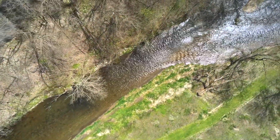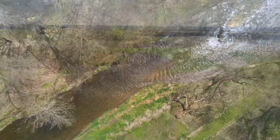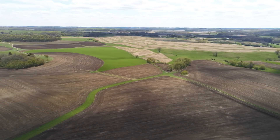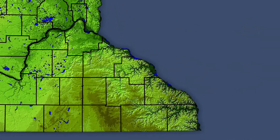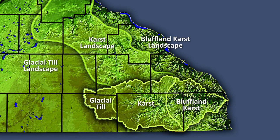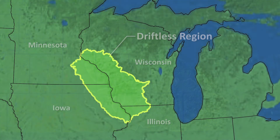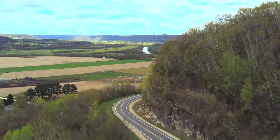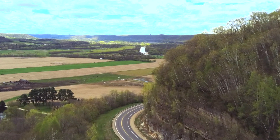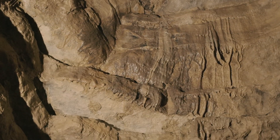This scenic landscape and the life it supports is closely tied to the fascinating and complex pathway water takes through it. By understanding how groundwater moves differently within the glacial till, karst, and Bluffland karst landscapes, we can understand how groundwater moves throughout much of southeast Minnesota and the Driftless region. The next time you drive through the area, look at the rock exposed on the sides of the road and consider how this region's geology affects the movement of water, both on the surface and underground.